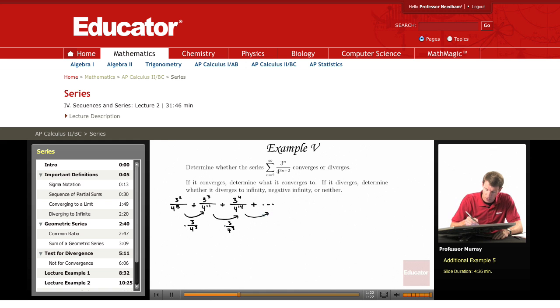And so each one of these terms, you get it by multiplying the previous term by 3 divided by 4 cubed. And so what we have here is a geometric series.